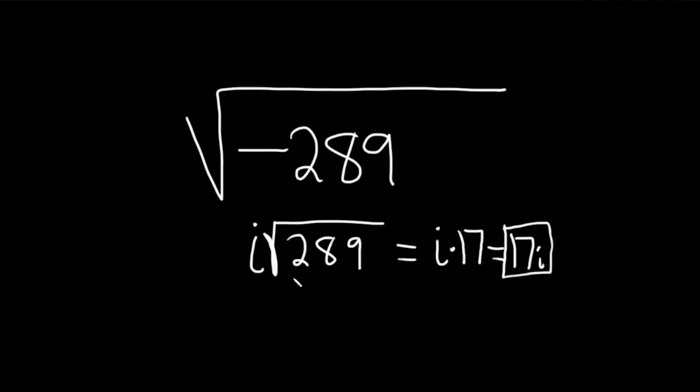However, a better way to do this is as follows. So whenever you see a negative like this in the square root, you say okay, there's going to be an i.